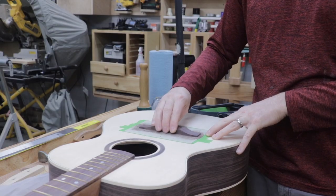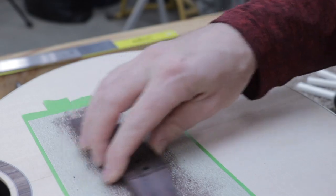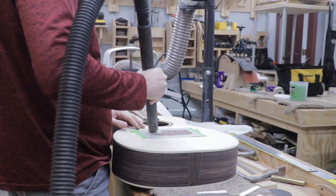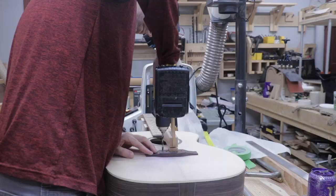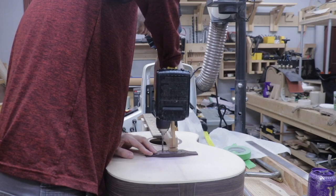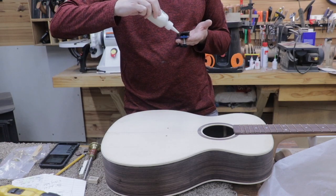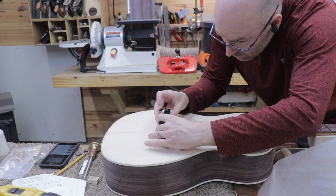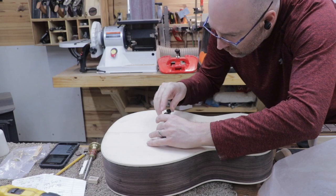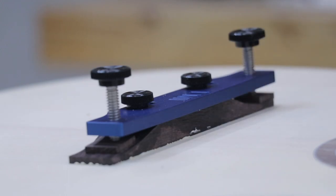Next, I sanded the bridge to the general radius of the soundboard in preparation for glue-up. For this glue-up, I used a special bridge clamp sold by Luther's Mercantile International. This glue joint is critical and probably one of the most common failure points on a guitar. Many of you have probably seen a guitar where the bridge is pulling up from the soundboard. This clamp is also super useful because it's easy to clean up the glue squeeze-out.